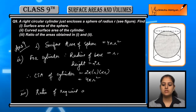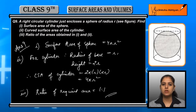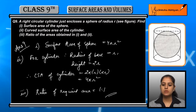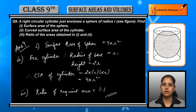So the ratio of the required areas — that is the ratio of the surface area of both — is equal to 1:1.